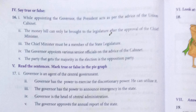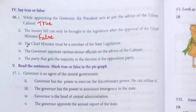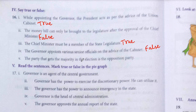True or false: While appointing the Governor, the President acts as per the advice of the Union Cabinet — True. The Money Bill can only be brought to the Legislature after the approval of the Chief Minister — False. The Chief Minister must be a member of the State Legislature — True. The Governor appoints various Senior Officials on the advice of the Cabinet — True. The party that gets the majority in the election is the Opposition Party — False; that is the ruling party.